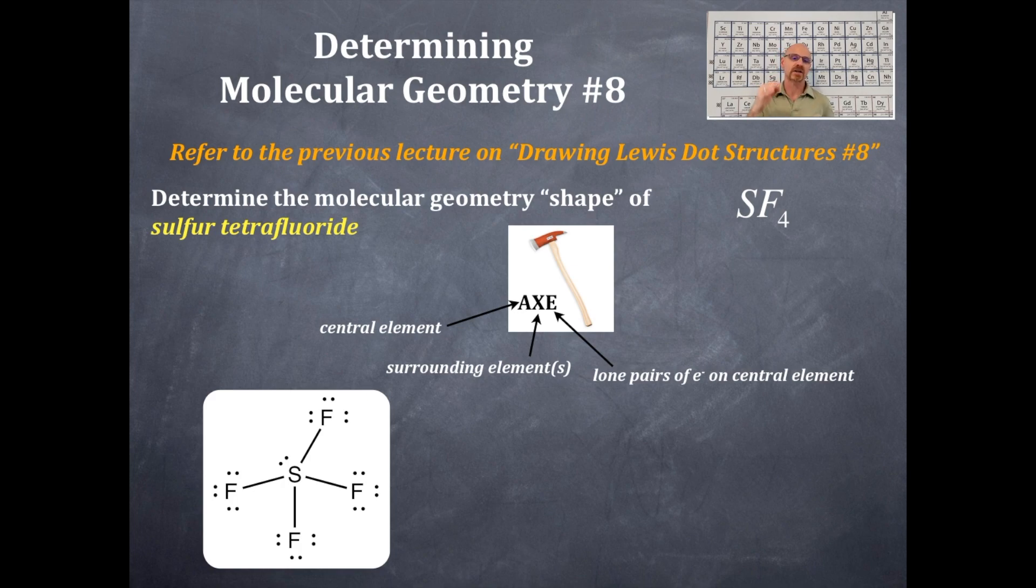So that would be AX₄. And then there's a lone pair of electrons directly on that sulfur. So that would be an E. So it's going to be AX₄E.